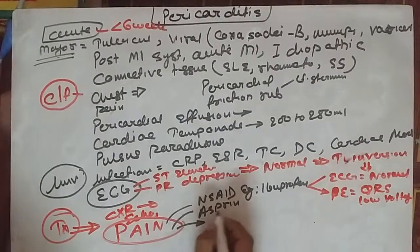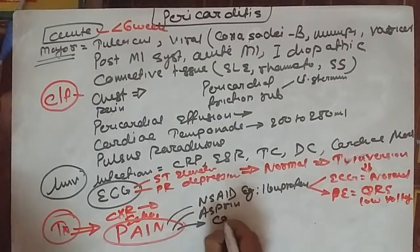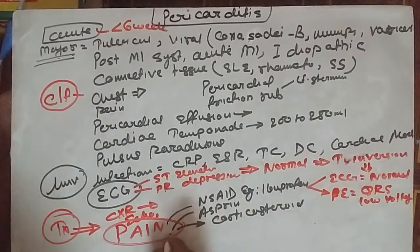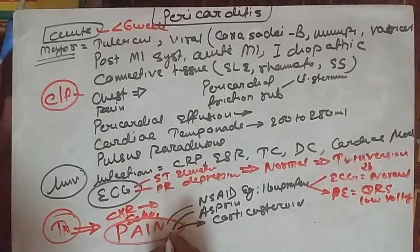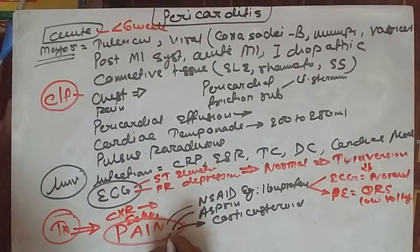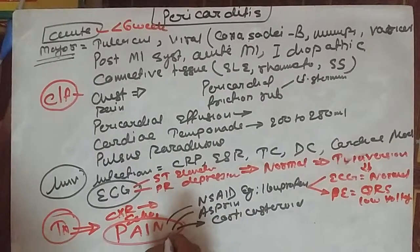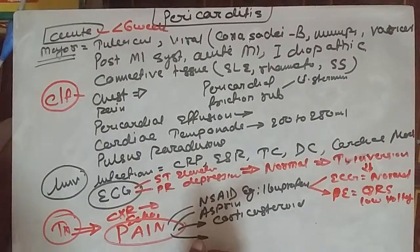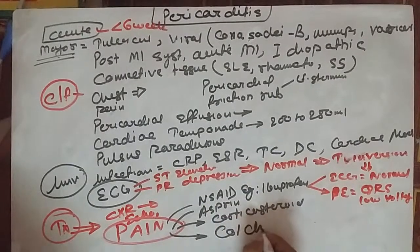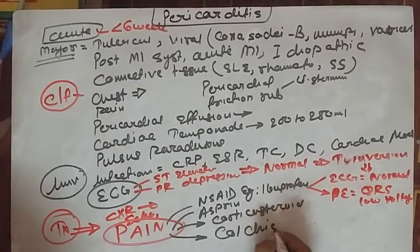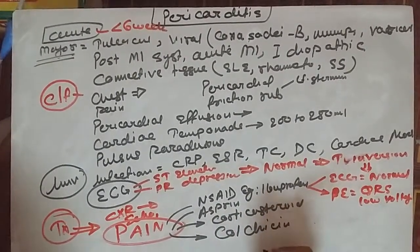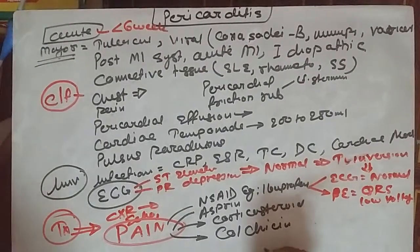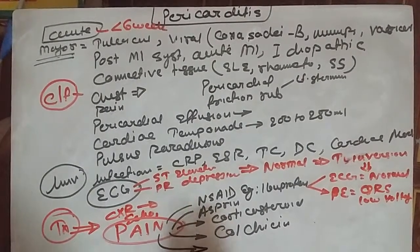If pain is not relieved by NSAIDs, then corticosteroids can be given. Colchicine should also be given along with NSAIDs because it helps prevent recurrence of pericarditis. After symptomatic treatment, address the underlying cause of pericarditis.